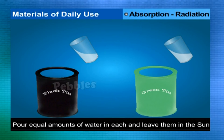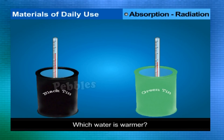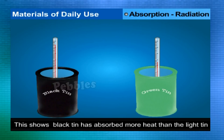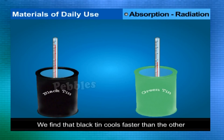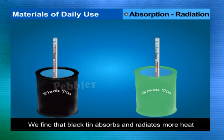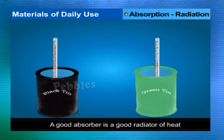The water in the black tin is found to be warmer, showing that the black tin absorbed more heat. When both tins are heated and left in a room, the black tin cools faster, showing it also radiates more heat. Therefore, a good absorber is a good radiator, and a poor absorber is a poor radiator of heat.